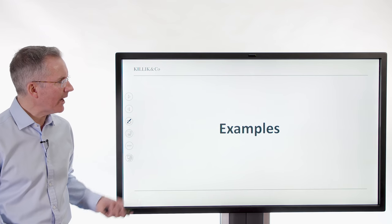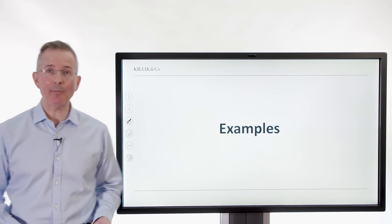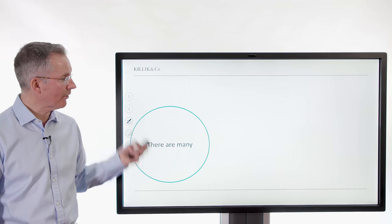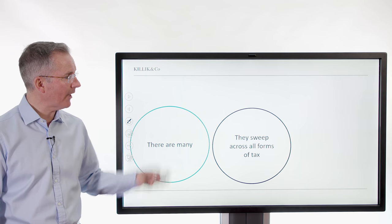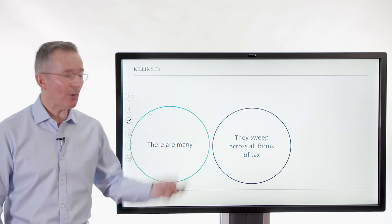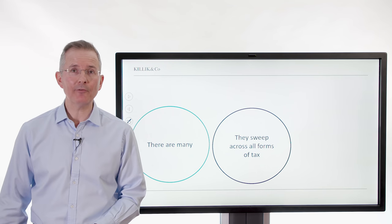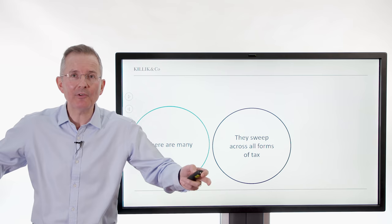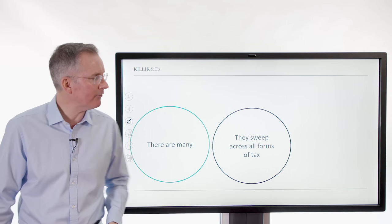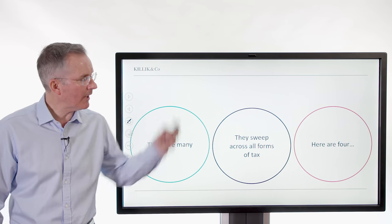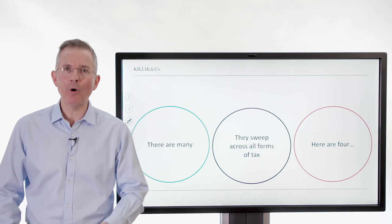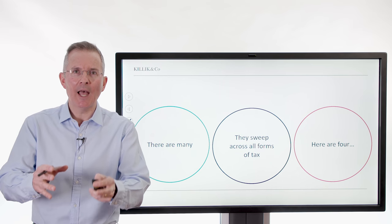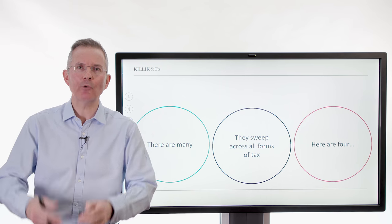The best way is to proceed by example. There are loads of them — they sweep across all forms of tax. There's virtually no form of tax that doesn't have some sort of stealth aspect to it. So let's look at four examples, focusing more on individuals and personal tax.